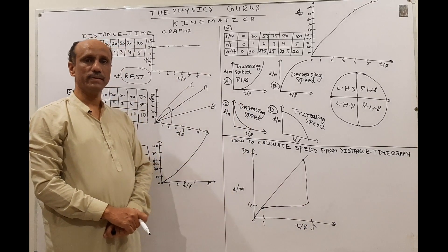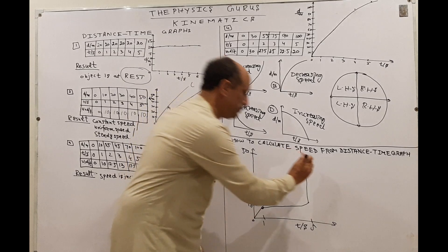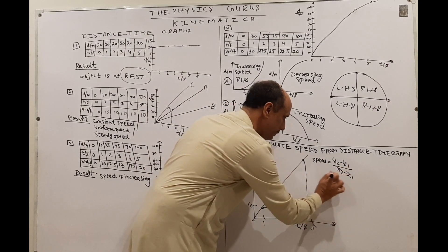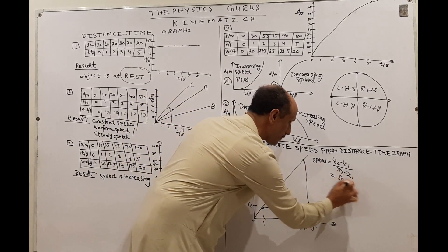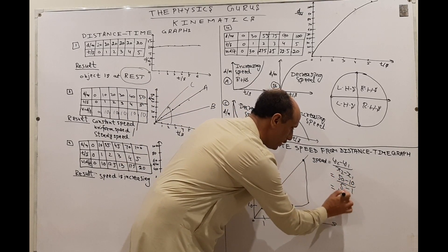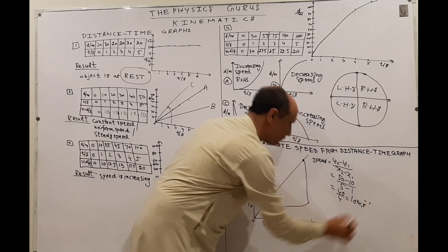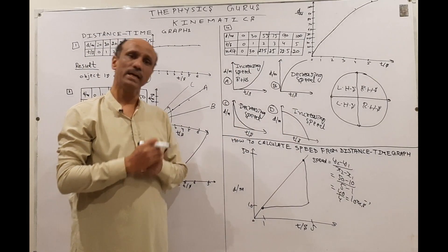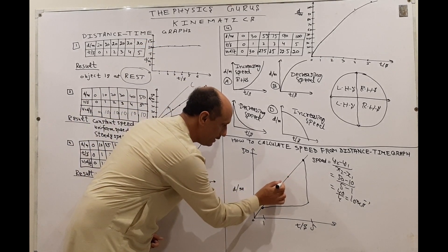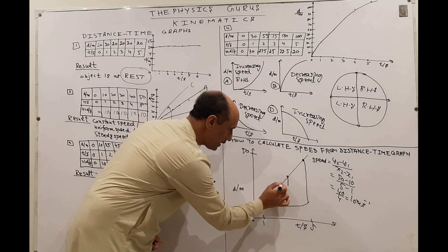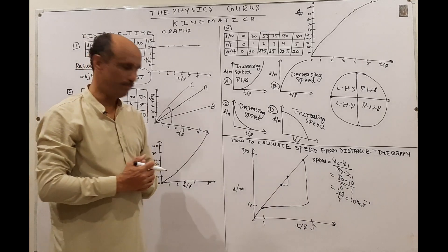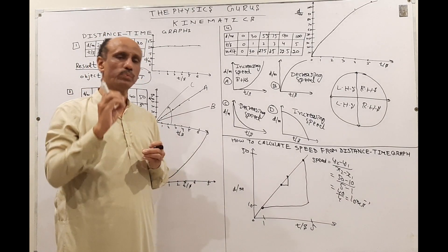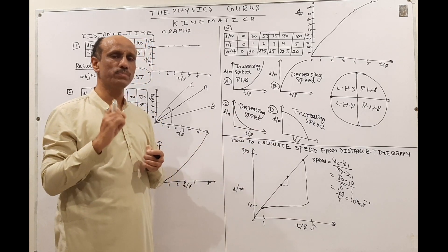To calculate speed by finding the gradient: speed = (y2 − y1) / (x2 − x1) = (50 − 10) / (5 − 1) = 40 / 4 = 10 meters per second. This is the standard way to calculate speed from a distance-time graph. If you draw a very small triangle where the two points are not more than half the given line, your answer will be the same because the gradient remains the same, but you will not get full marks. The rule is: always select two points on the line such that the distance between them is more than half the length of the line.